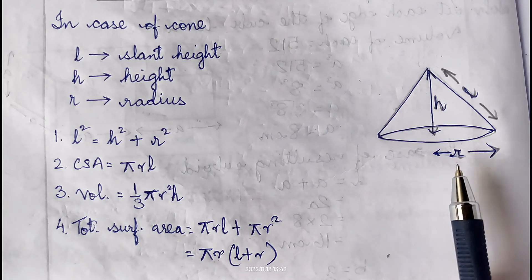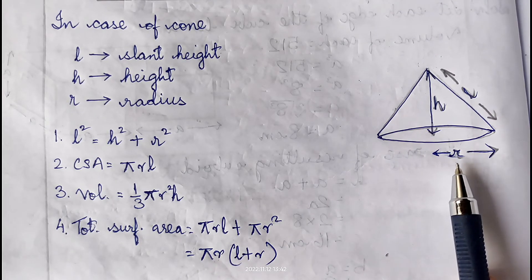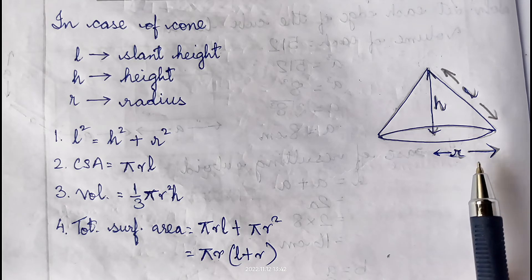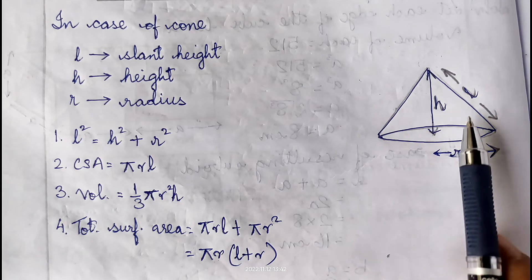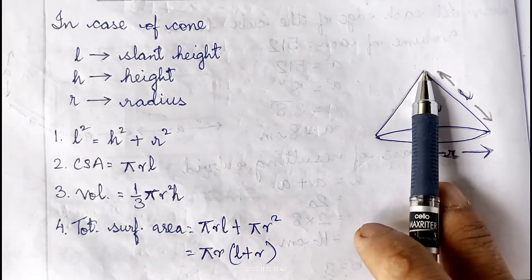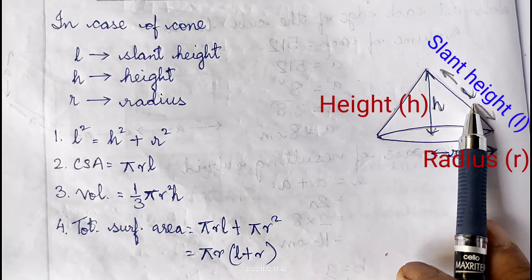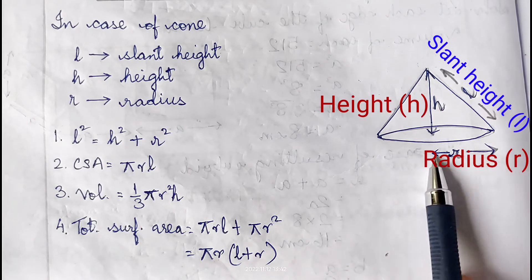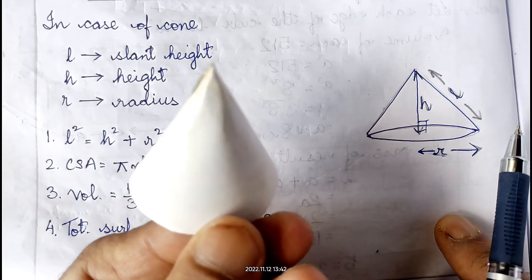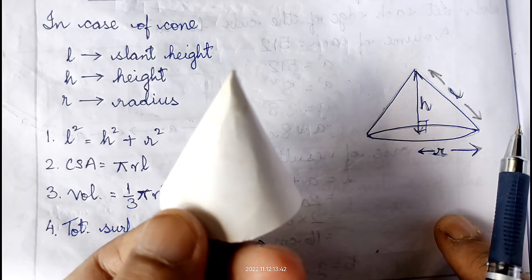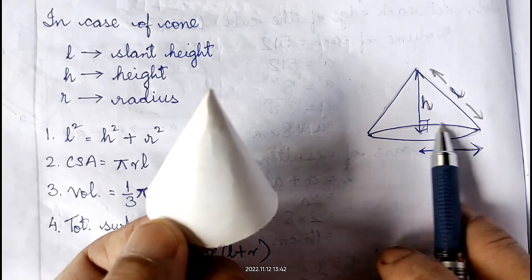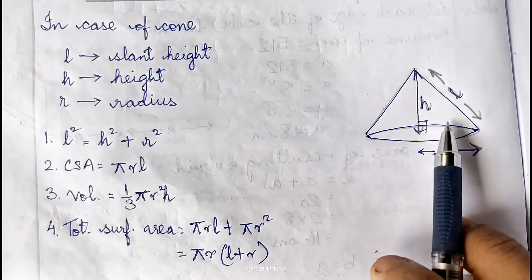A right circular cone is a solid generated by revolving a line segment that passes through a fixed point and makes a constant angle with a fixed line. The base is circular, the height is h, and the slant length from the apex to the base edge is called the slant height, represented by l. You've seen this shape in birthday caps and ice cream cones.